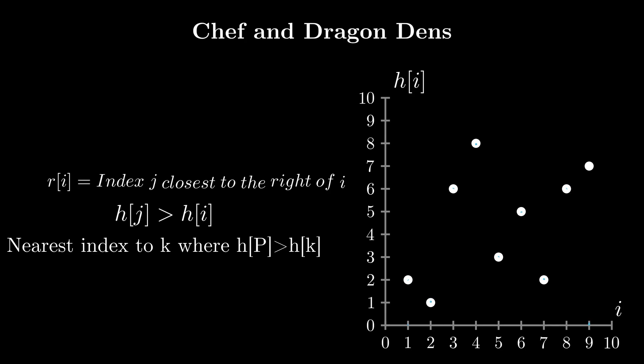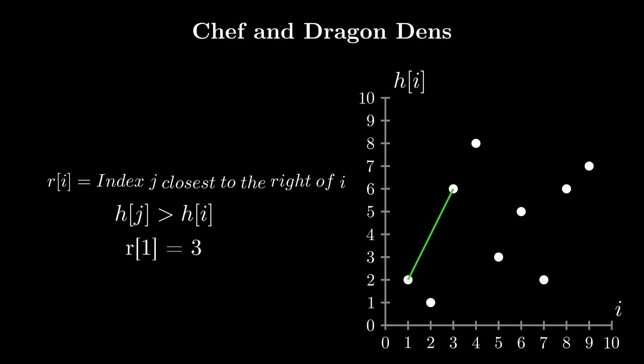This is a classic problem which can be implemented using a stack. R[1]=3, as that's the closest index to its right with a height greater than 2. R[2]=3. Similarly, R[3]=4. We set R[4]=0 as there is no point to its right with a height greater than 8. We continue this in a similar manner.